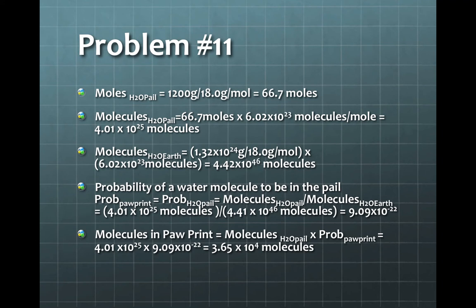First we determine the number of moles by dividing the mass of the water by the molar mass. Then we multiply this by Avogadro's number to determine the number of molecules in the pail. So we get 4.01 times 10 to the 25 molecules.